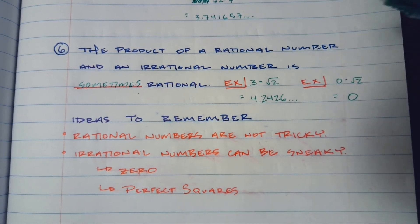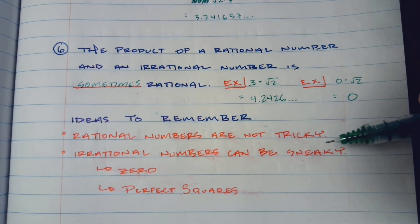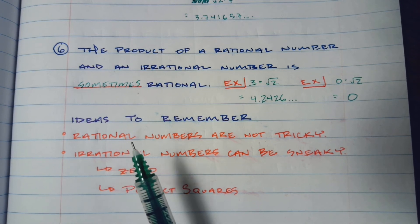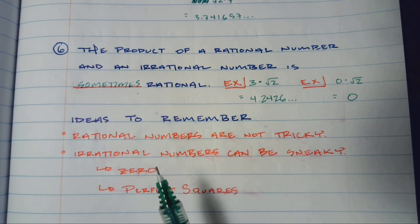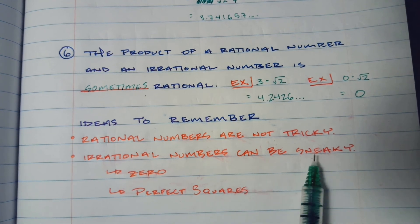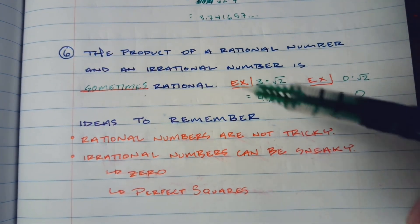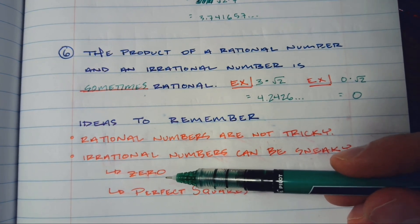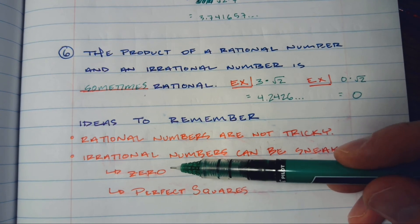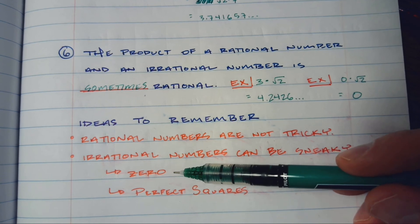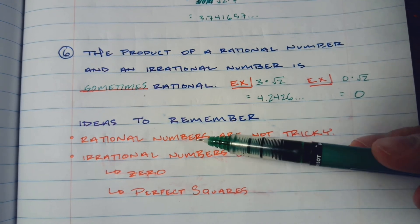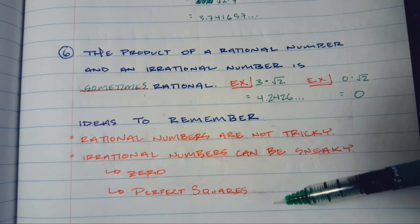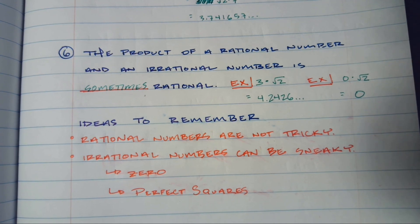Two things to remember: rational numbers are not tricky — they're not trying to trick you, they're not suddenly going to go off into infinity. Irrational numbers can be sneaky, though. There are a couple of cases where you have to be careful. When you involve zero in a multiplication, it can throw things off — whether you're adding and subtracting to get zero, or multiplying and getting zero. Perfect squares are another thing that suddenly vaults us back into rational number land — √16 is just 4, √81 is just 9. We're going to work a lot on examples of this in class Monday and Tuesday. Hope you have a fantastic rest of your weekend!